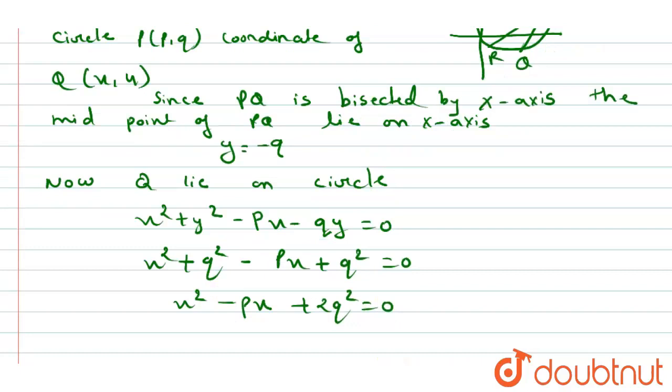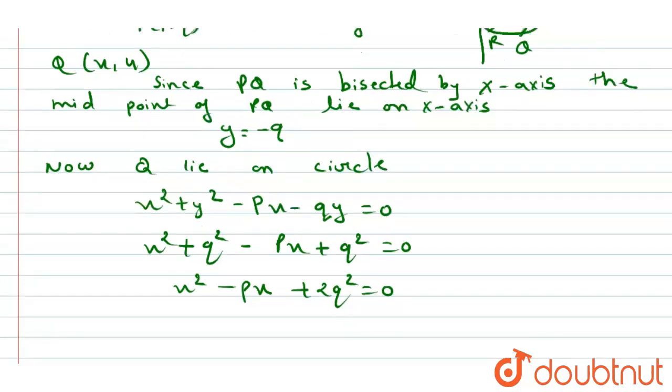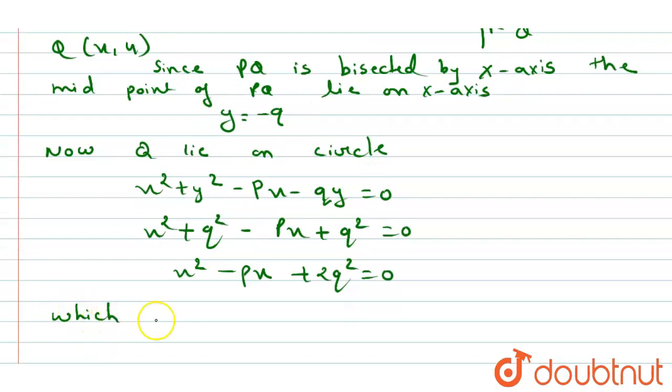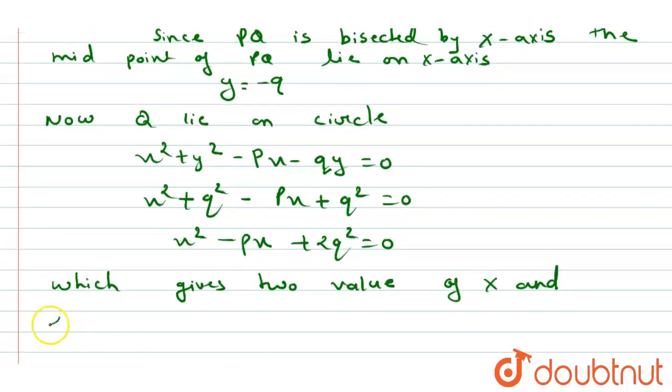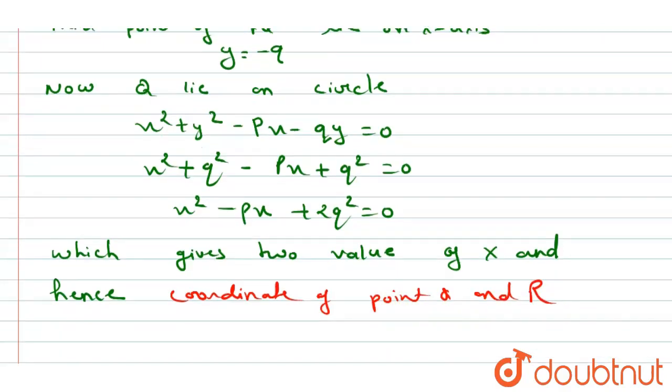Now, according to the conditions, this gives two values of x, and hence the coordinates of points Q and R. So the chords PA and PR are bisected by the x-axis.